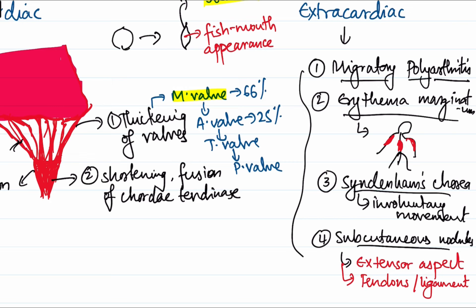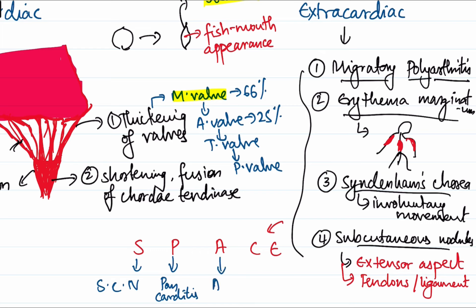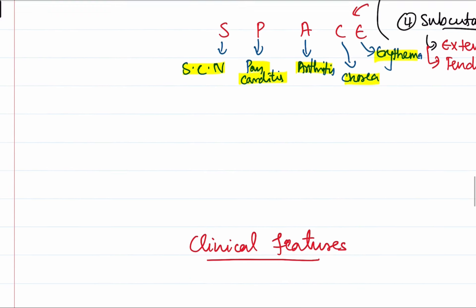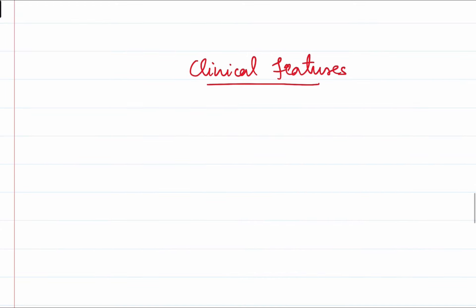To remember these manifestations, there is a mnemonic: SPACE. S is subcutaneous nodules, P is pancarditis, A is arthritis (migratory polyarthritis), C is chorea (Sydenham's chorea), and E is erythema marginatum. These are the five major criteria included in Jones criteria for diagnosis.